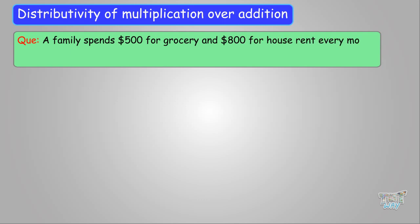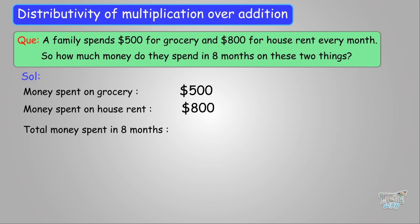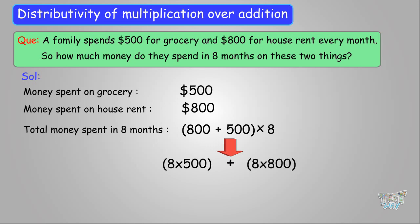A family spends $500 for groceries and $800 for house rent every month. So how much money do they spend in eight months on these two things? We have to multiply (800 plus 500) by 8. And we know that (800 plus 500) times 8 is the same as multiplying 8 with 500 and multiplying 8 with 800, and then adding the results. Multiplying 500 with 8 gives 4,000. Multiplying 800 by 8 gives 6,400. Adding the two products, we get 10,400.